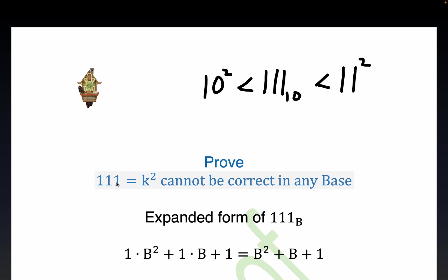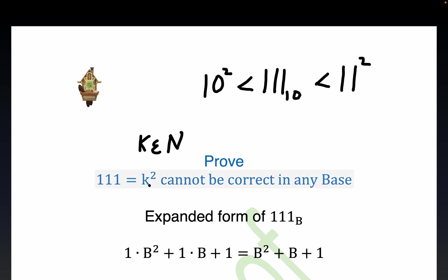But we want to show in general that the digits 111 in any base cannot be equal to k squared. Of course k would be an integer. We'll write down k is a natural number, positive integer. And again we're trying to establish that this arrangement of digits cannot be a perfect square in any base, not just base 10.